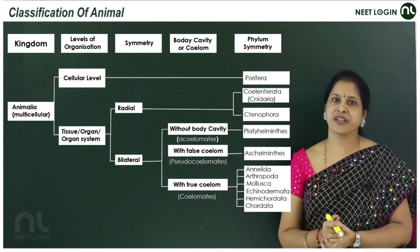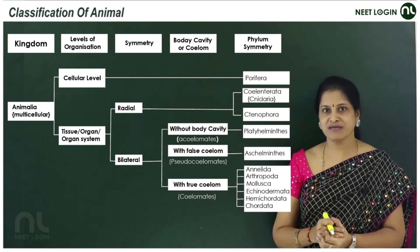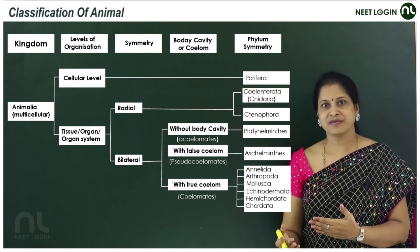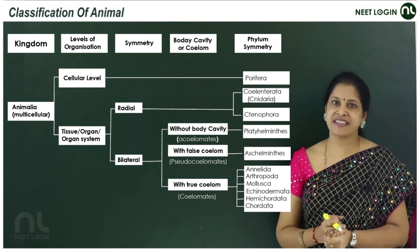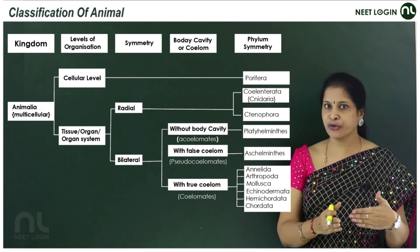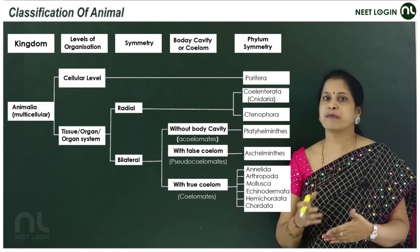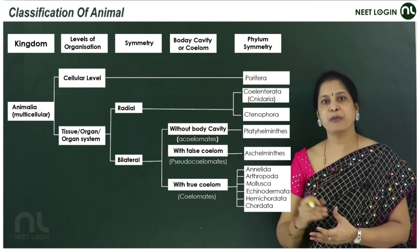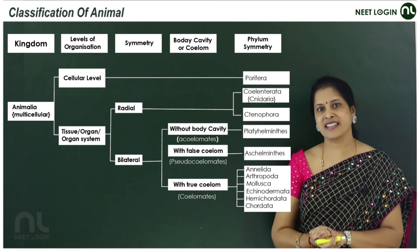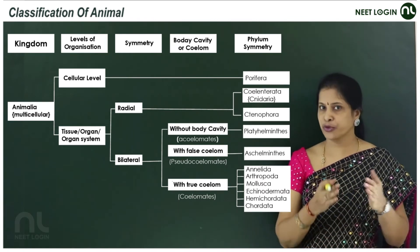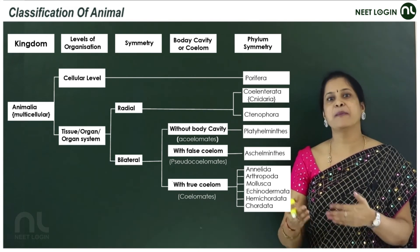Organ level of organization: triploblastic, acoelomates with bilateral symmetry. The level of organization is organ level, the symmetry is bilateral, and these triploblastic acoelomate animals with no coelom are Platyhelminthes.